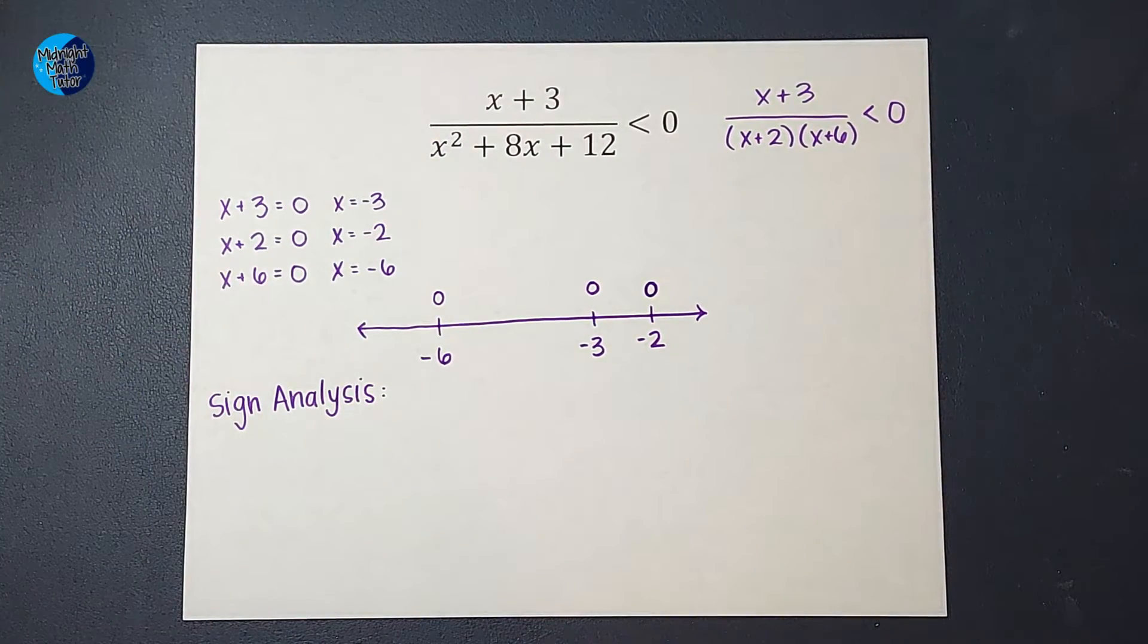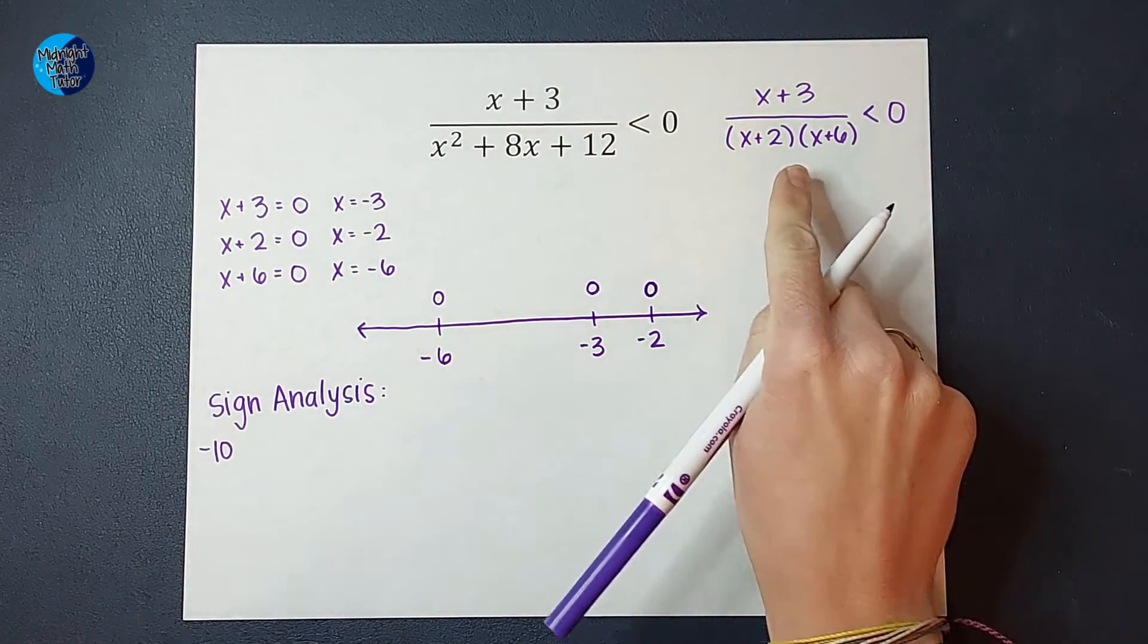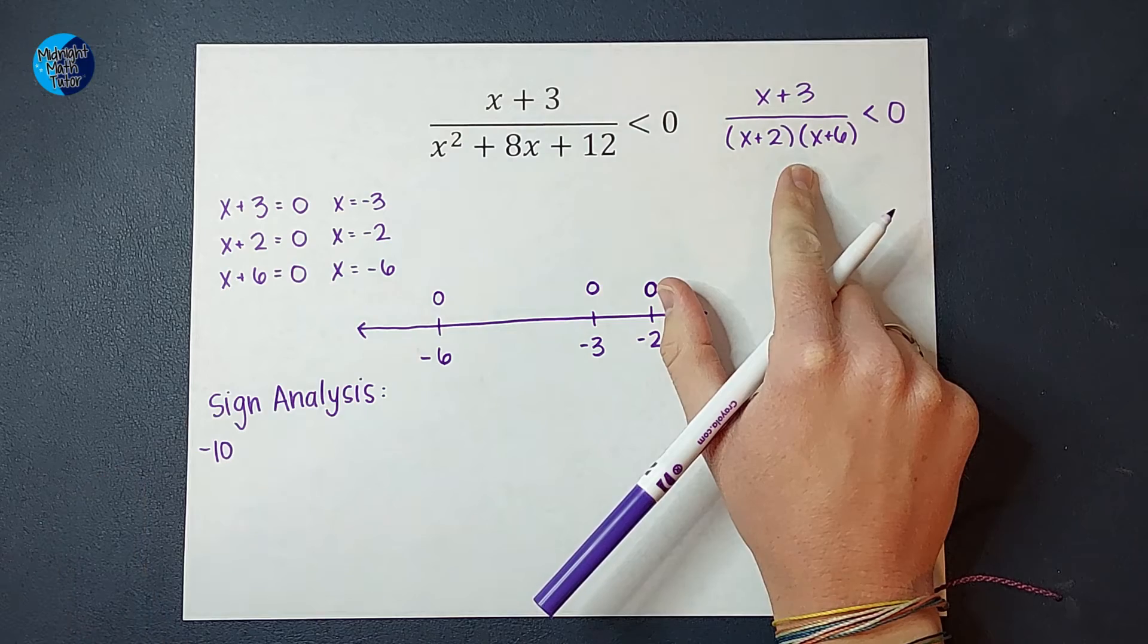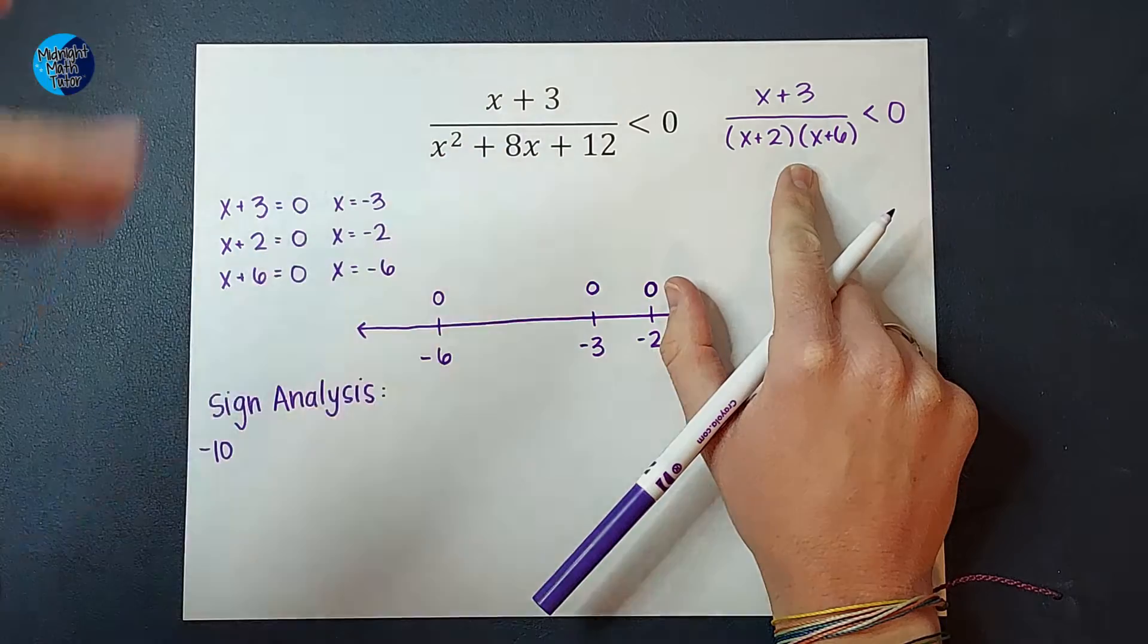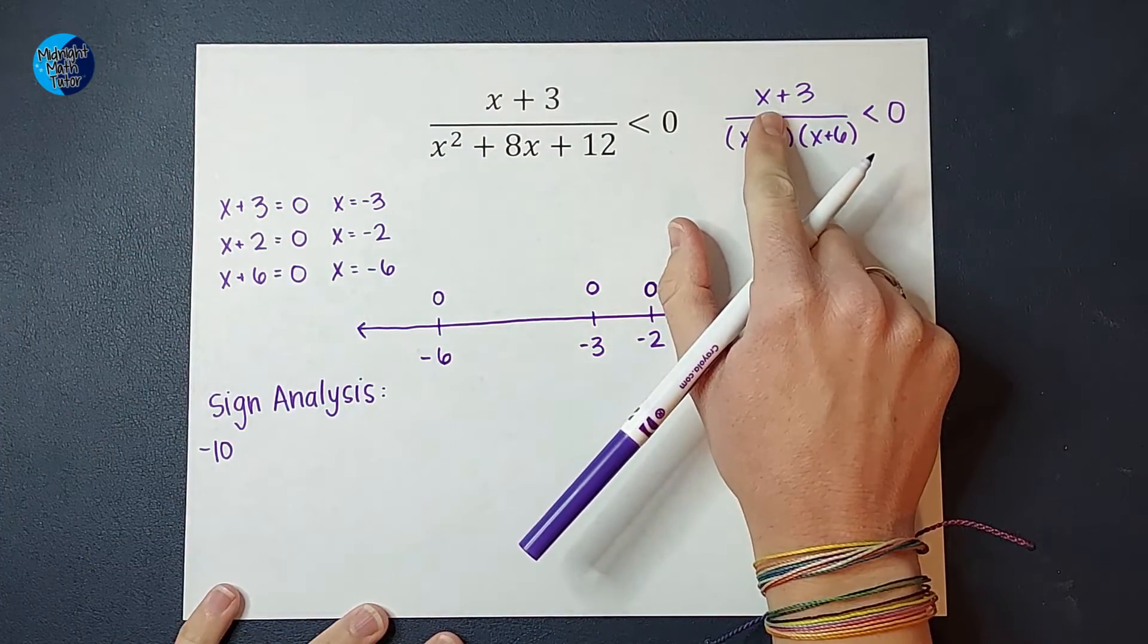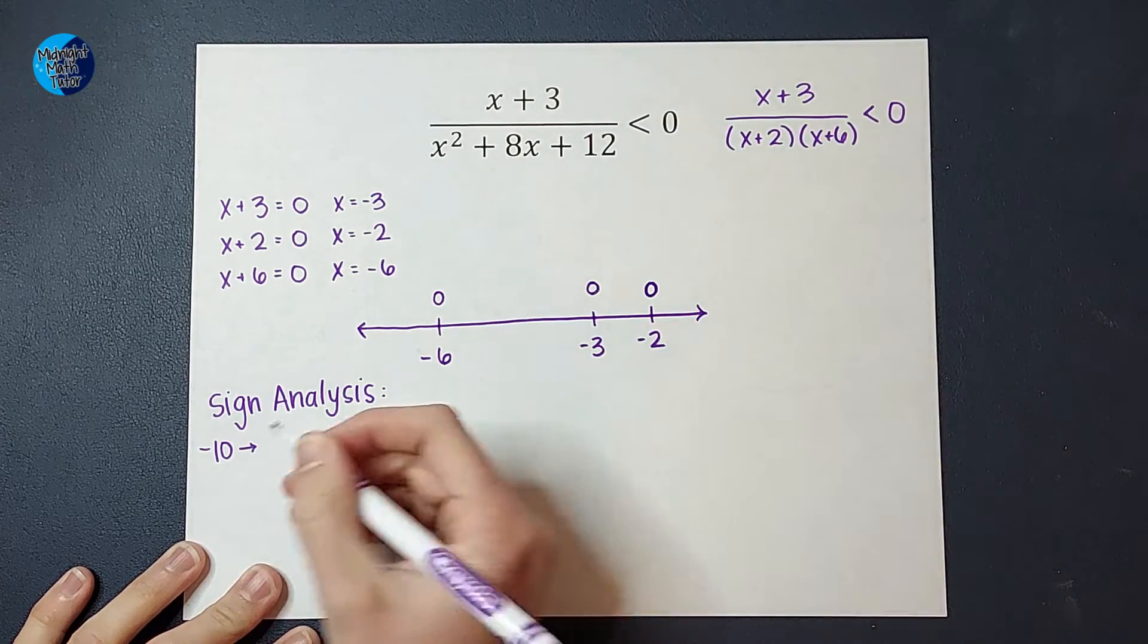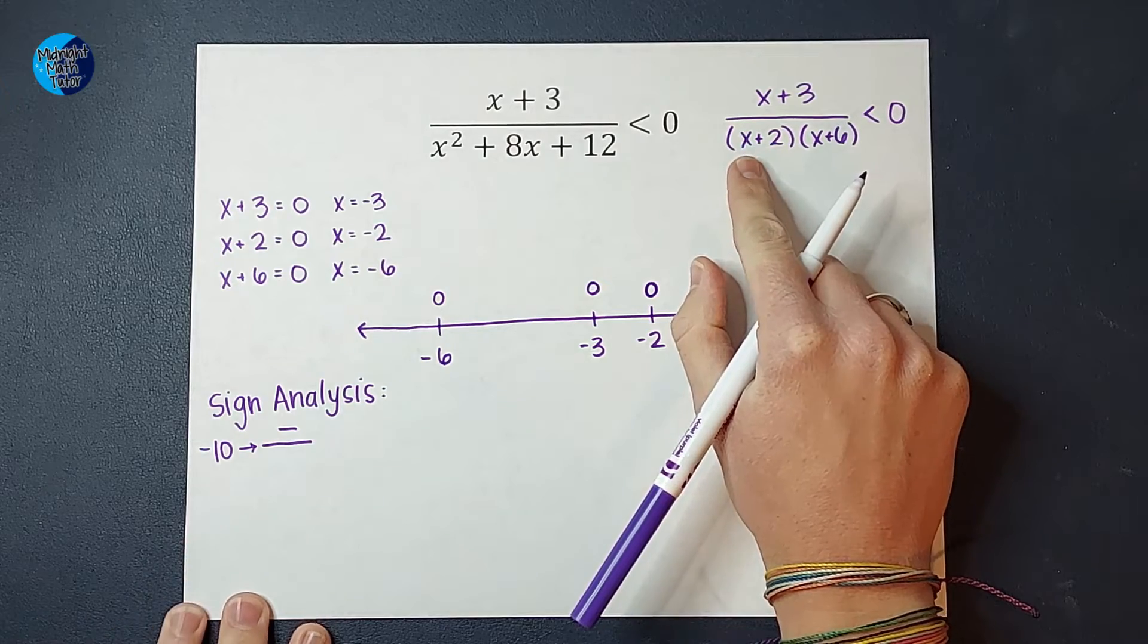I'm just going to pick negative 10. I'm going to plug in negative 10 to this inequality. And the funny thing is, since we're doing sign analysis, I don't actually care what my number answer is. I only care if it's positive or negative. So I'm going to plug this in. If I were to plug in negative 10 for x, on top, I would have negative 10 plus 3, which would give me a negative. Then on bottom, if I plug in negative 10, I'd have negative 10 plus 2, which would give me a negative.